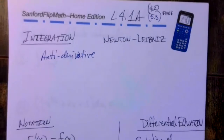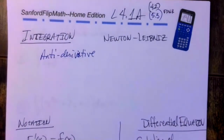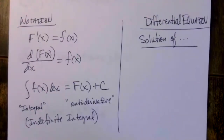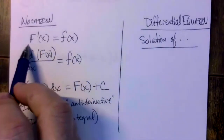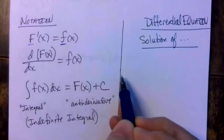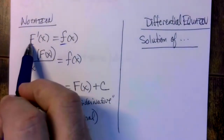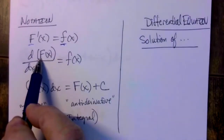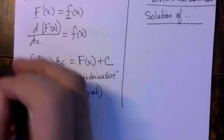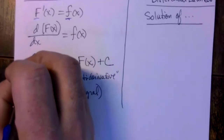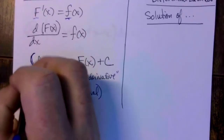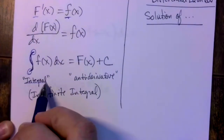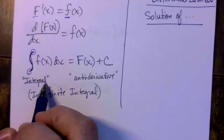So we're undoing the derivative. There are many notations that go with this. It is very common to think of the original function as capital F and the derivative as lowercase f. So the derivative of capital F is lowercase f. And then we use this integral symbol — it looks like an S that somebody grabbed the ends of and pulled — which means integral.